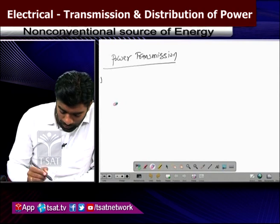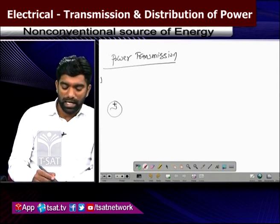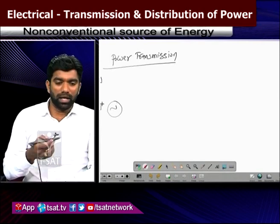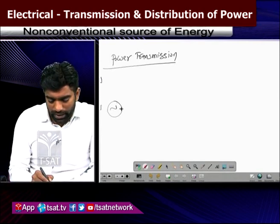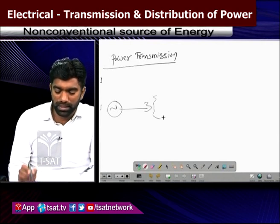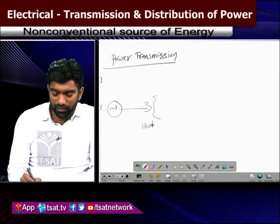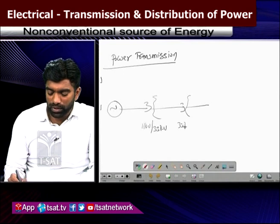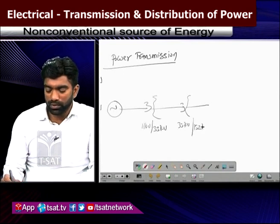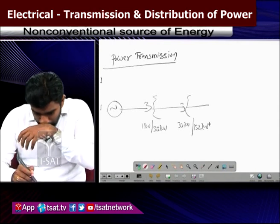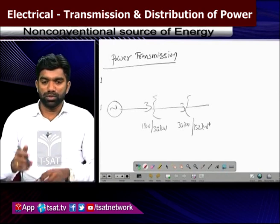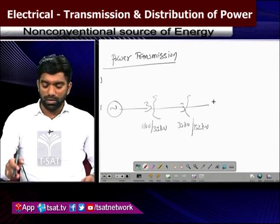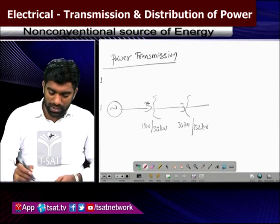Suppose you are generating 11 kV — either thermal, hydel, nuclear, or gas. We step up this 11 kV to 33 kV using a transformer. Then again this 33 kV is stepped up to 132 kV at a substation. These are called the primary transmission network. After stepping up, these are called secondary transmission.